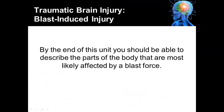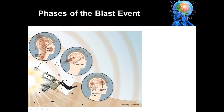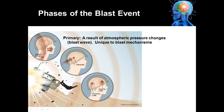By the end of this unit you should be able to describe the parts of the body that are most likely affected by a blast force. Blast related injury is related to the various phases of the blast event. From the previous module we identified four different types of injury that can occur after an explosion. Remember that the primary blast injury is due to the blast wave itself.